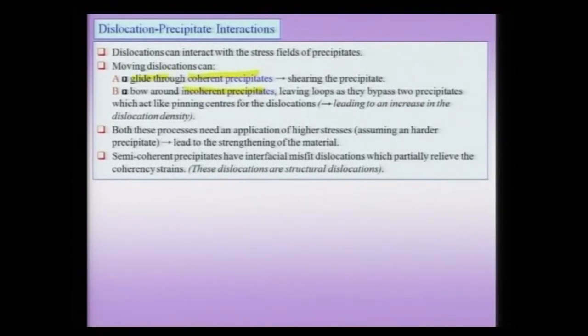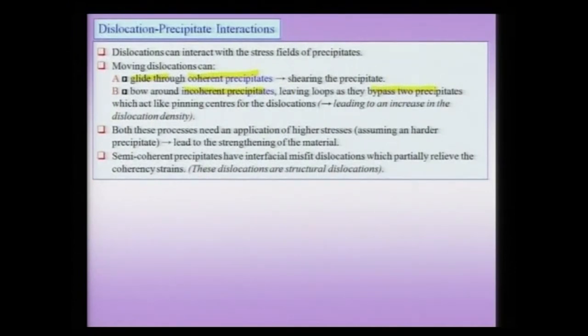In the case of a coherent precipitate, the dislocation can actually glide through the precipitate and shear it, because the atomic planes are continuous from matrix to precipitate. In the case of an incoherent precipitate, the dislocation cannot glide through — it must bypass the precipitate, leaving loops in the wake of the moving dislocation. Both processes require a higher applied stress, assuming the precipitate is harder than the matrix, and both lead to strengthening of the material.